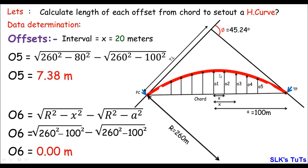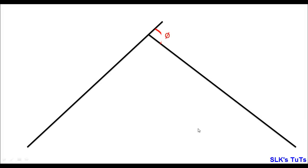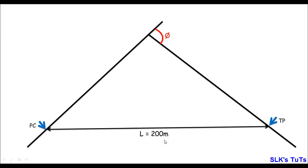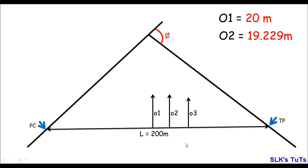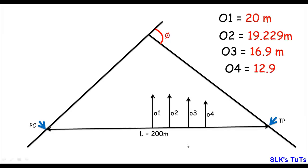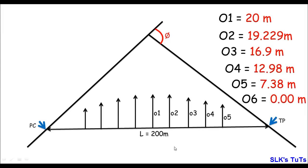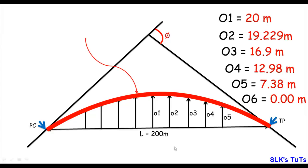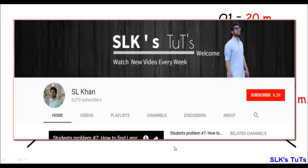Now with all offsets calculated, you can set out the curve using a tape or linear measuring instrument. Locate the point of curve (PC) and tangent point (TP), join them to get the chord of 200 meters, then take perpendicular offsets: 20m, 19.229m, 16.9m, 12.98m, and 7.38m from the middle outward on each side. Join the upper limits of each offset to get the required circular curve. If you like the video, please subscribe and give a thumbs up. Thank you for watching.